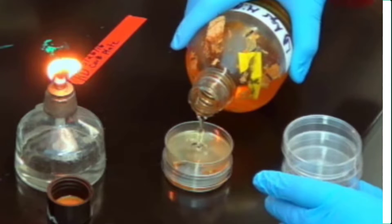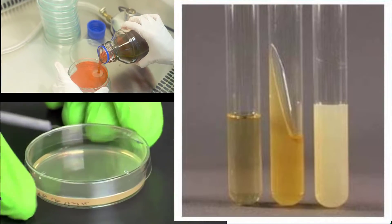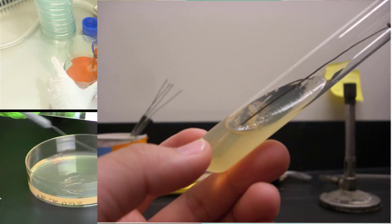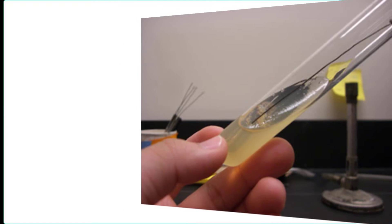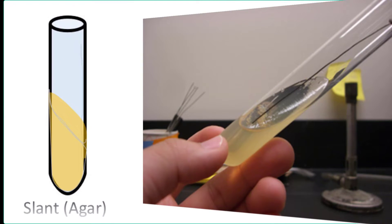Warm agar can be poured into petri dishes to form petri plates or agar plates or poured into test tubes. And you can even keep those test tubes at a slanted angle as it solidifies so that you can get slant tubes or simply slants.